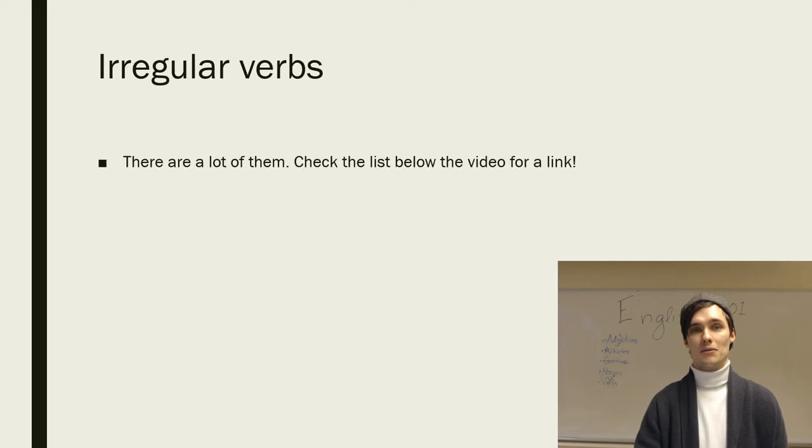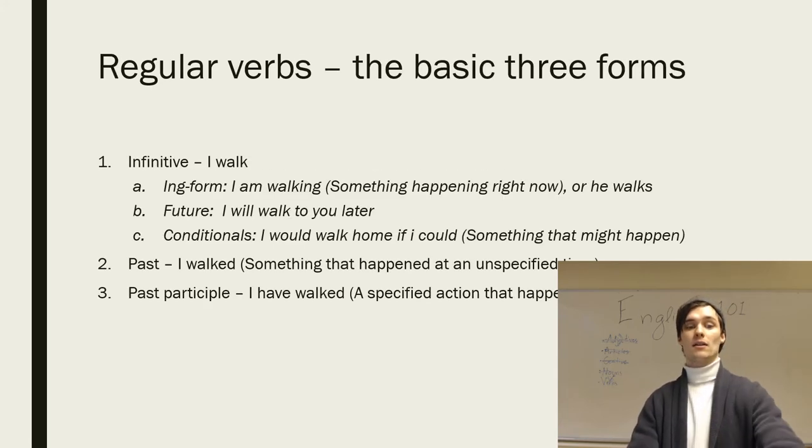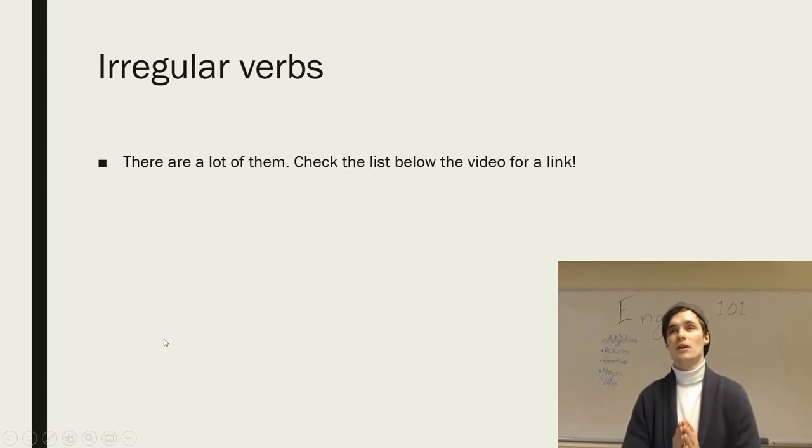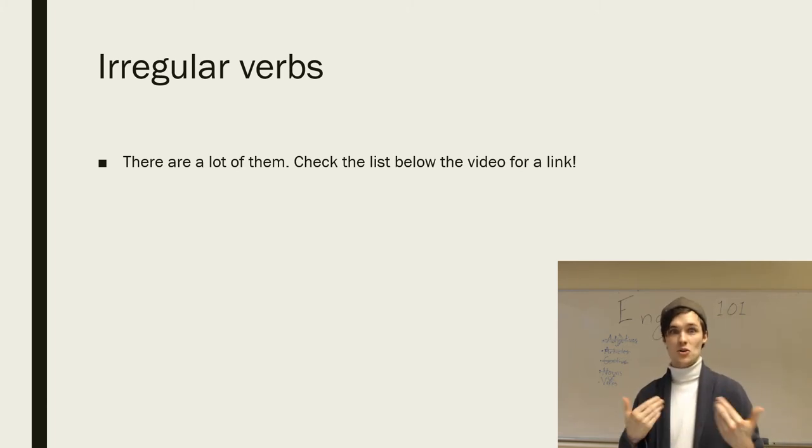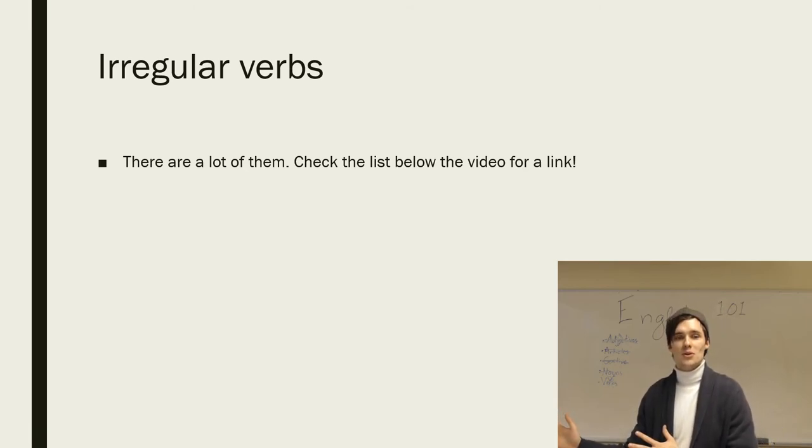Then we move over to the irregular verbs. This is all I have on them because there are a lot of them. I will post a link down below to a site that lists many of them, where you also find the three forms: the infinitive, the past, and the past participle, and how they work. To learn them, there is no rule - they are away from the rules, so you just have to learn them.